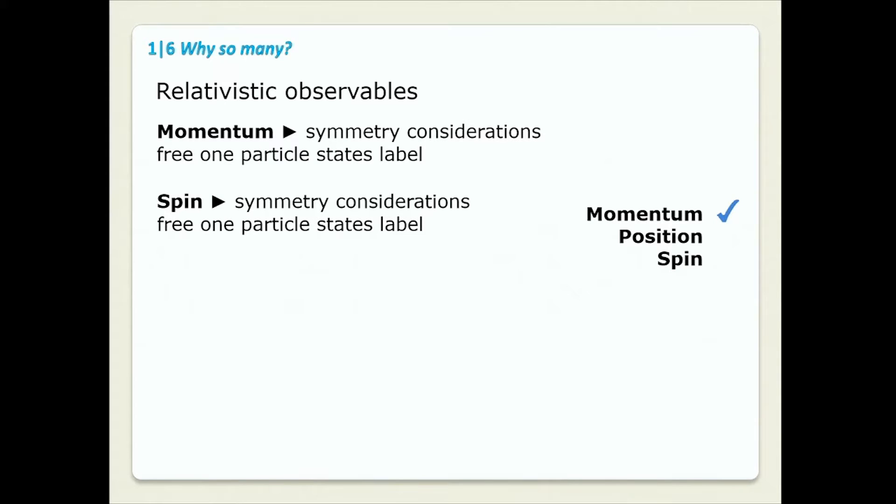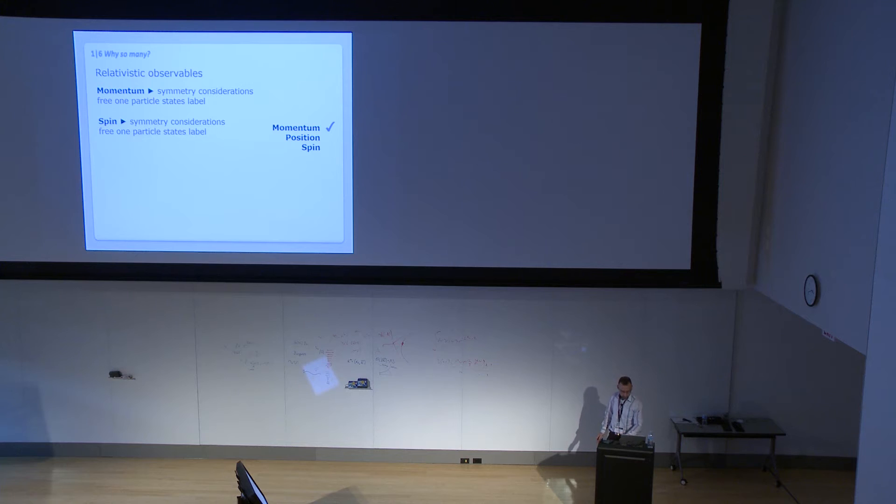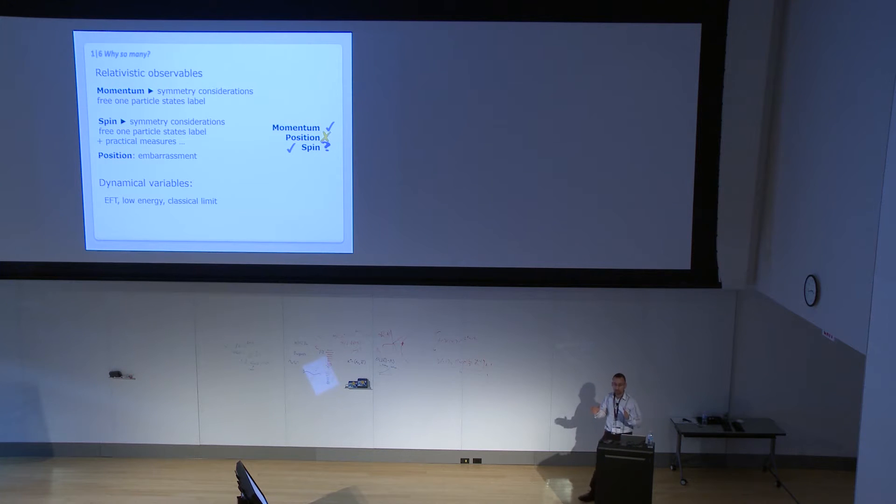More specifically, if we talk about momentum, then we get it from symmetry considerations. It's work by Wigner, popularized by Weinberg and many other people. We use momentum to label one particle free state. So, okay, fine. Spin comes together with momentum very often. So symmetry considerations, free, again, label for free one particle states. Pretty good. There are practical considerations how particle physicists actually characterize spin. So the story becomes slightly murkier. And position is just an embarrassment. Many textbooks even avoid talking about position at all. And if they talk, it's somewhat like Victorians and sex. So it happens to animals, but not discussed in literature.